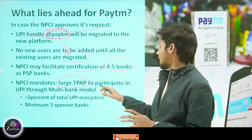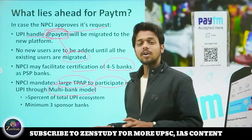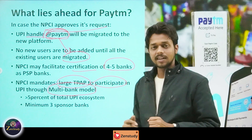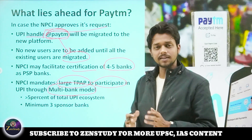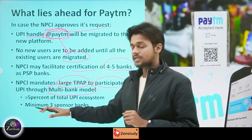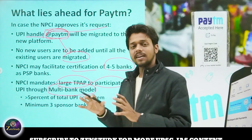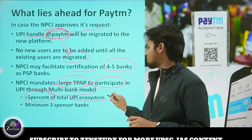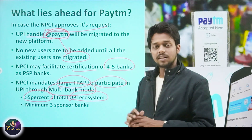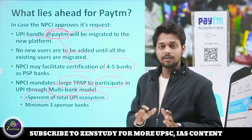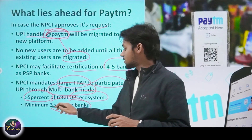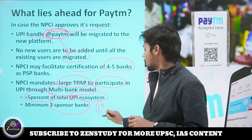All UPI platforms have to participate through a multibank model, meaning they need multiple sponsor banks — not just one bank. This is the NPCI mandate. Specifically, any third party application whose UPI transaction value per month is greater than 5% of the total UPI ecosystem must follow the multibank model. For such large TPAPs, a minimum of three sponsor banks is required and a maximum of ten. This was the NPCI regulation.